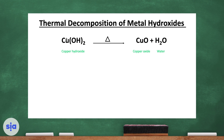Let's count together to verify the balance: 1 copper on the left, 1 copper on the right; 2 oxygen on the left, 2 oxygen on the right; 2 hydrogen on the left, 2 hydrogen on the right. So this equation is balanced. You can check the balance of every equation you encounter in this curriculum.